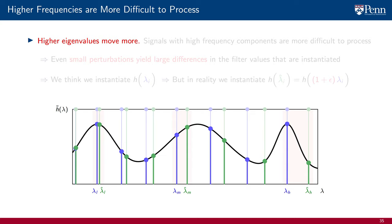This observation leads to a key insight, which is that high eigenvalues move more, or conversely, that low eigenvalues move little. The low eigenvalue lambda_i here barely moves when we dilate the graph. The medium eigenvalue lambda_m moves a little more, and the high eigenvalue lambda_h moves quite a lot.